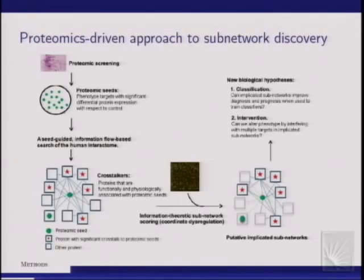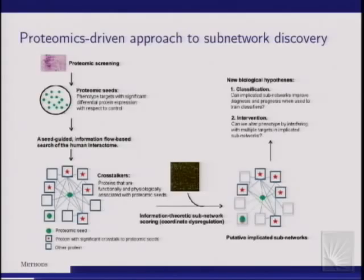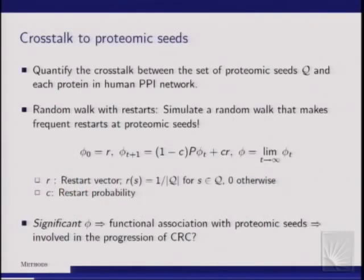Using the global interactome, we search and score the other proteins in the network to identify proteins that exhibit significant cross-talk to the proteins identified as dysregulated. I will explain how we define cross-talk. Based on those significant cross-talkers, we construct subnetworks and hypothesize that these will be good candidates for being coordinately dysregulated subnetworks. To find proteins functionally associated with the proteomic seeds, since the network is noisy and incomplete, we use something more robust.